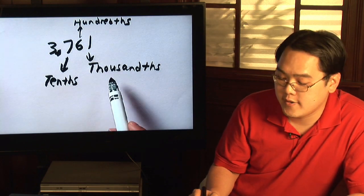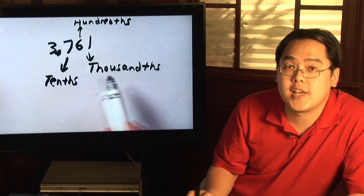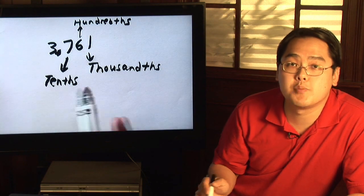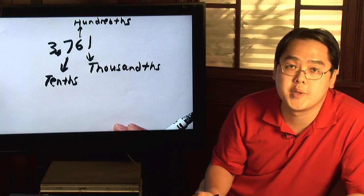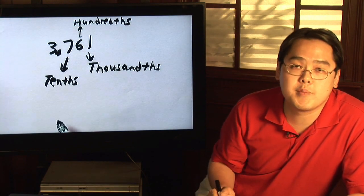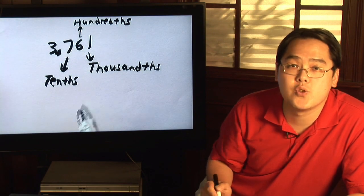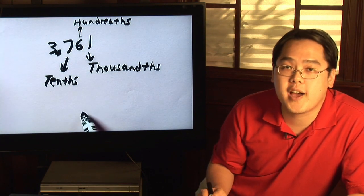After the thousandths you have ten thousandths, hundred thousandths, you get smaller and smaller the further away you are from the decimal. So I'm Jimmy Chang and that's a glimpse as to how decimal place values work.